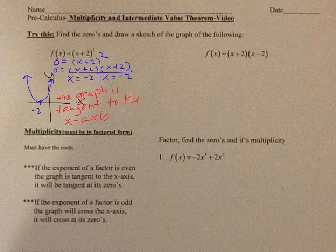Notice what this exponent is — it's a 2, which means it's even. When you have an even exponent, this is what multiplicity is. When you have an even exponent, you will have a tangent graph at that zero.